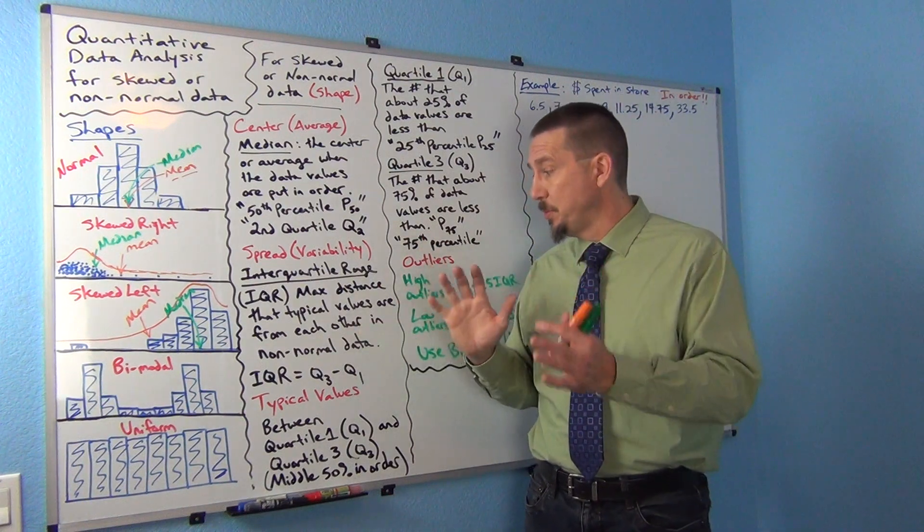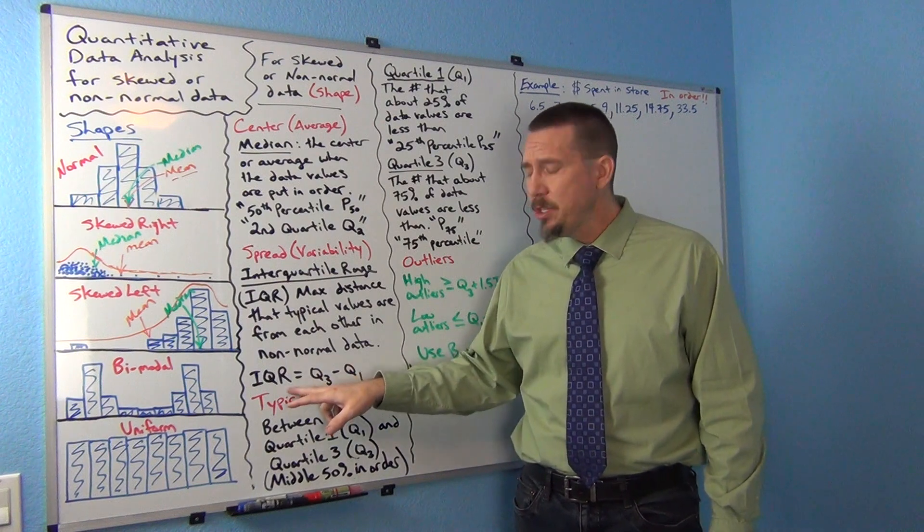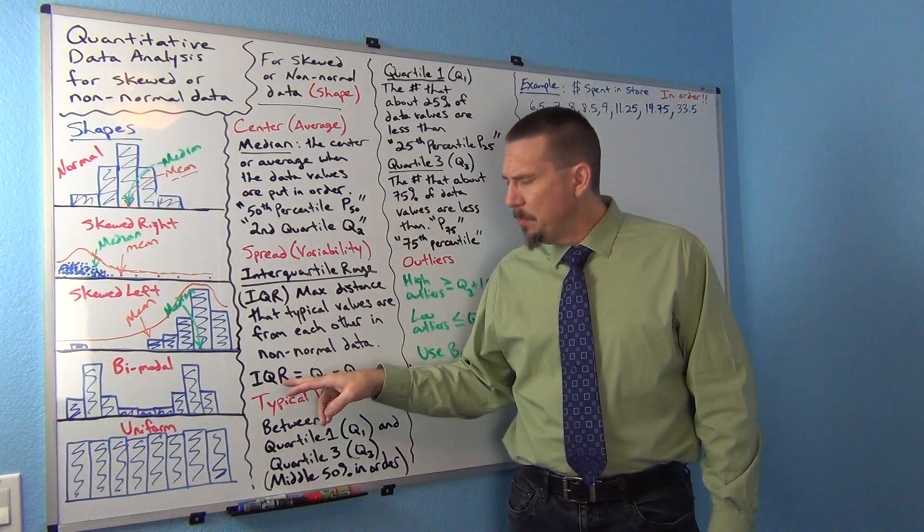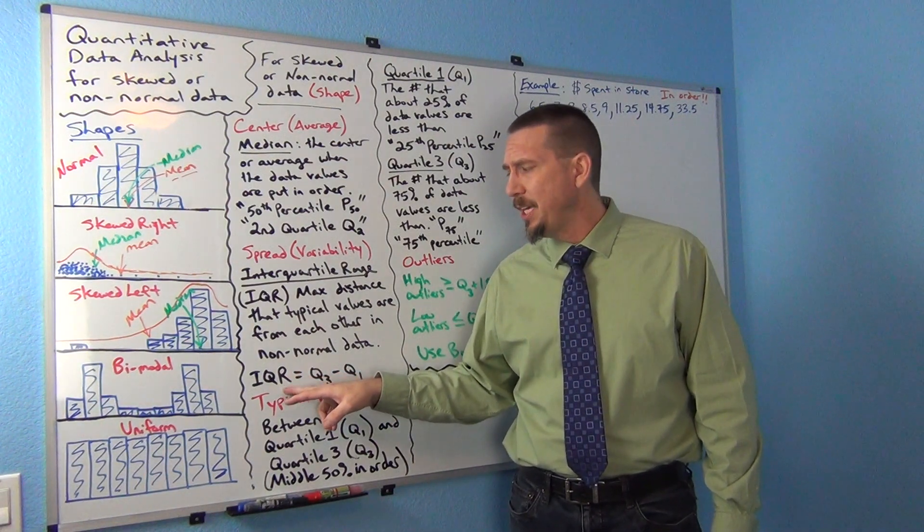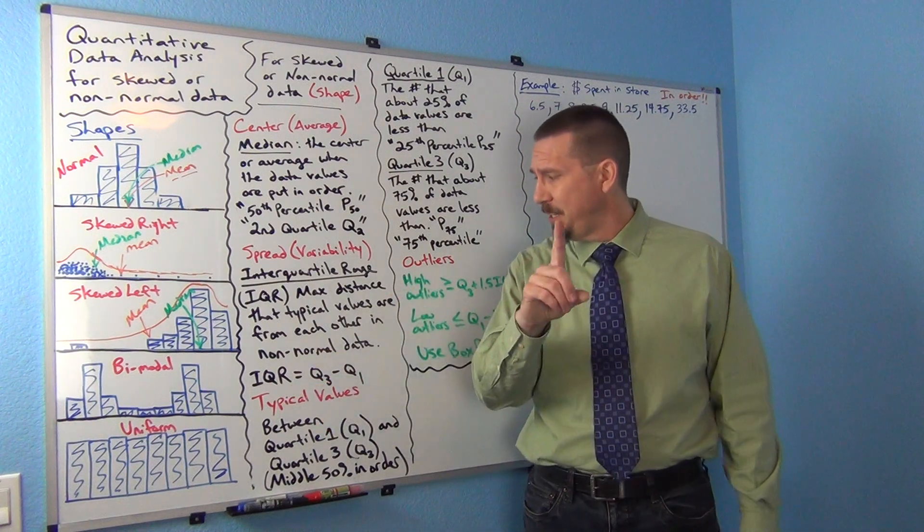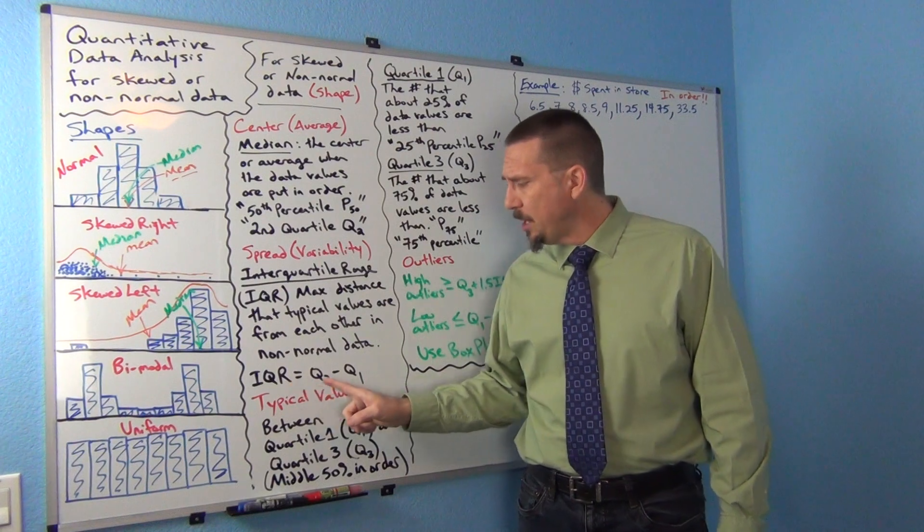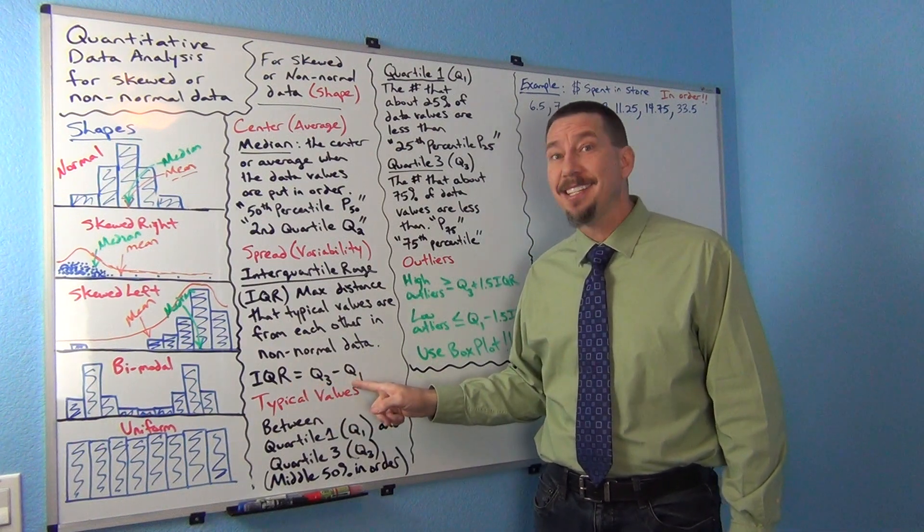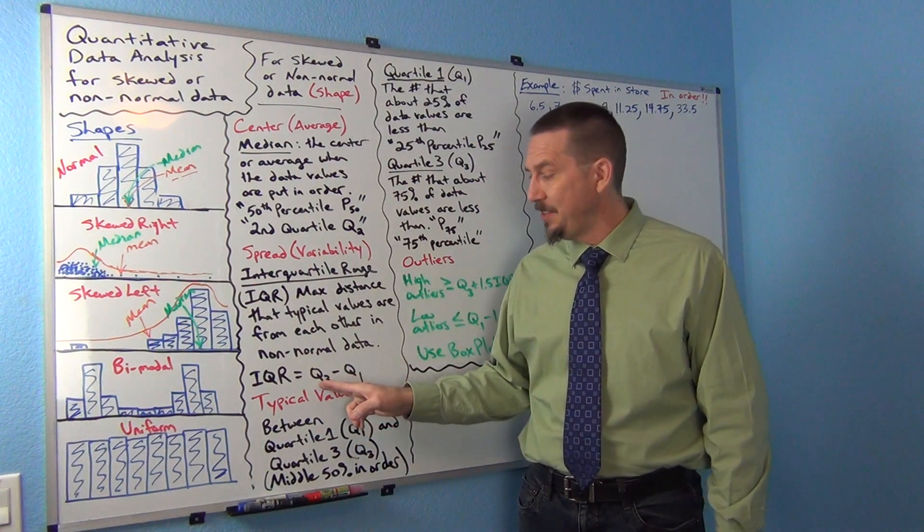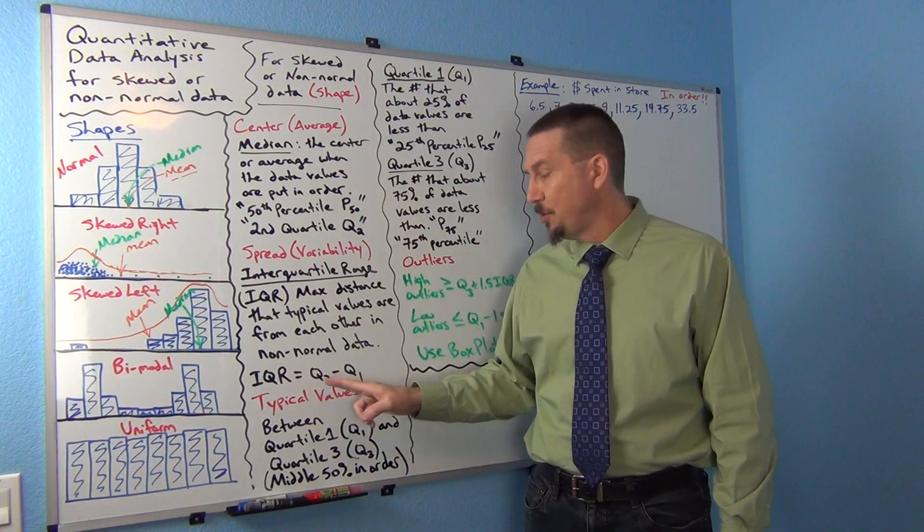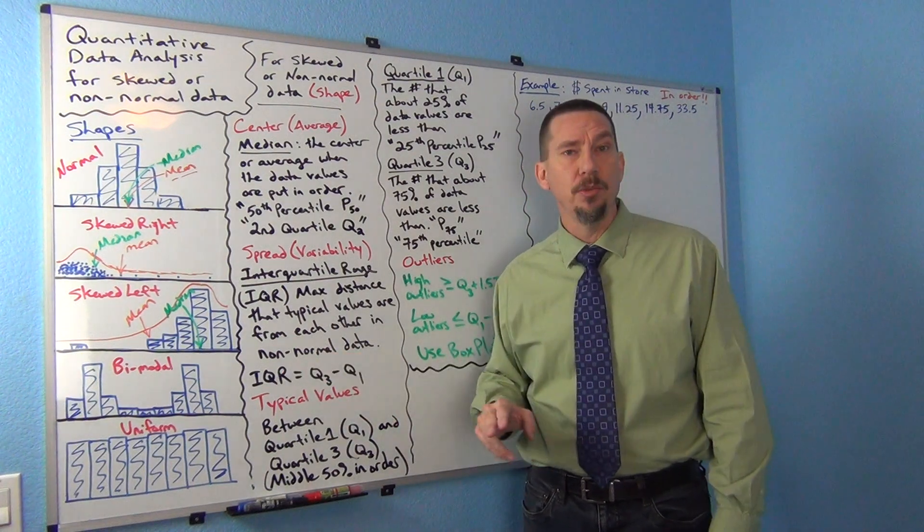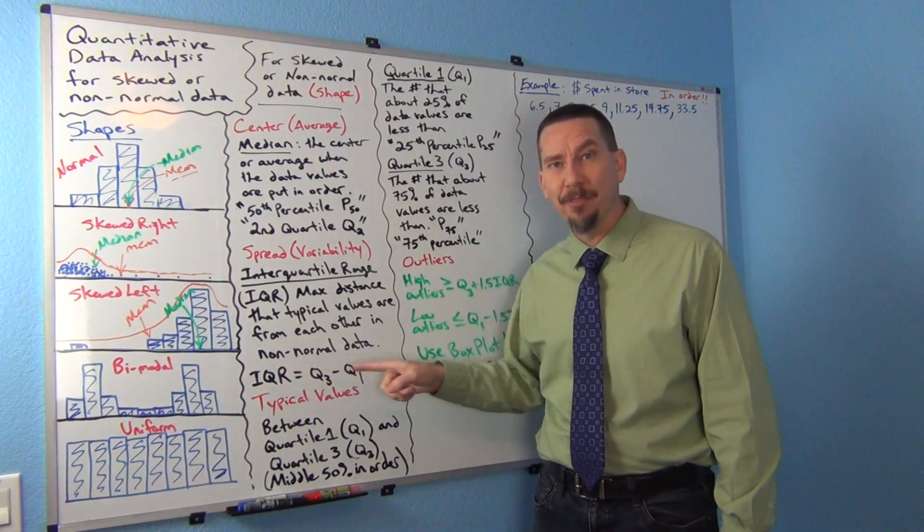It's usually about the middle 50%. How to calculate it is quartile 3 minus quartile 1. A lot of computer programs will actually calculate IQR for you, but occasionally you might get a program like StatKey that gives you quartile 3 and quartile 1 but doesn't tell you what IQR is. So it's not a big calculation - just take quartile 3 and quartile 1 and subtract them to get your IQR.